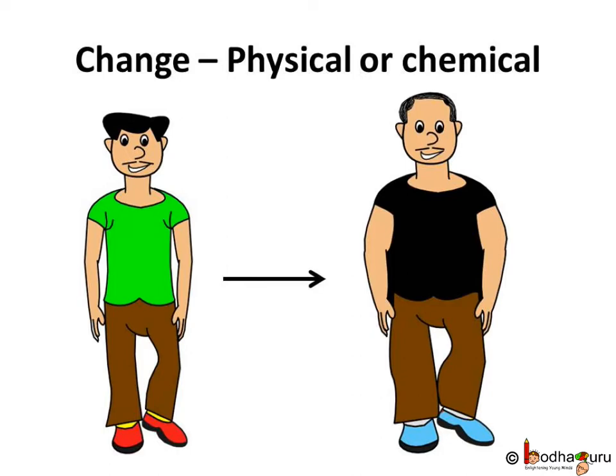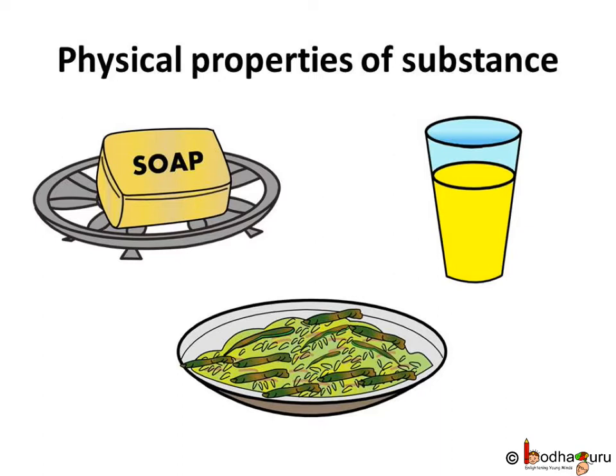Changes keep happening around us. Like with age, we grow old, get white hair, and may also put on weight. We all make many changes in real life. But how would we know whether it is a physical change or a chemical change? How do we recognize a substance? It is simple — by seeing the color, by smell, or by tasting them. Properties such as shape, size, color, and state of a substance are called its physical properties.